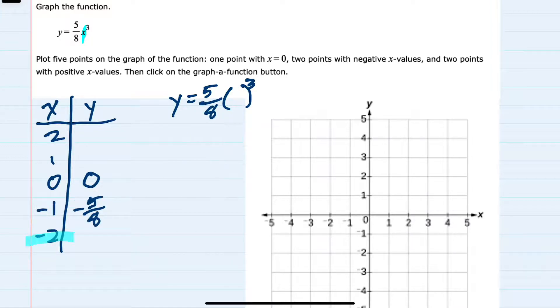Repeating the process with x equals negative 2, we substitute in negative 2, and negative 2 cubed is negative 8. So 5 eighths times negative 8, the eighths cancel, and we get y equals negative 5, so negative 5.